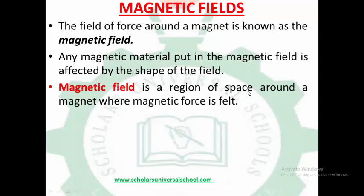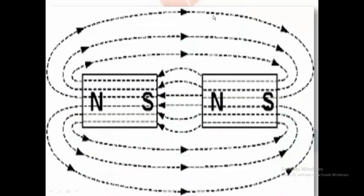A magnetic field is a region or space around the magnet where magnetic force is felt. That is, there is a space around the magnet that, when you bring any other magnet to it, you will find repulsion or attraction, depending on the poles. Any magnet brought into the field will either experience attraction or repulsion, depending on the poles.